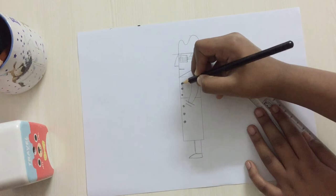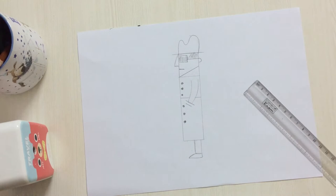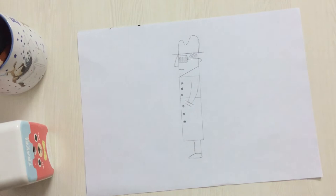Okay, so I'm done with my spy. Now I'm going to outline him using my black permanent marker with thick and thin tips.